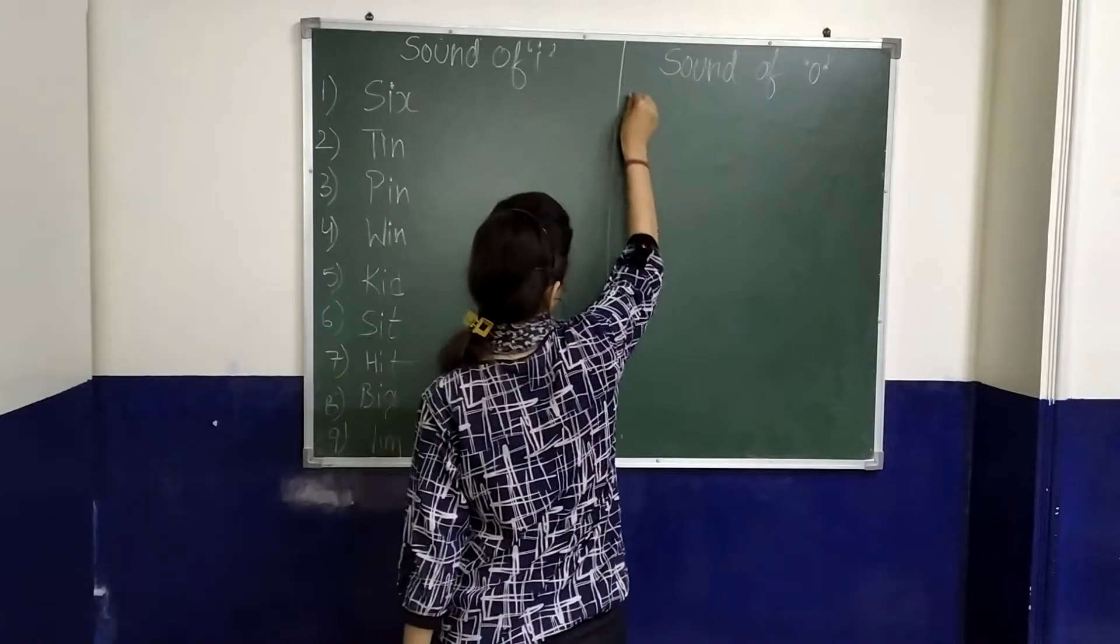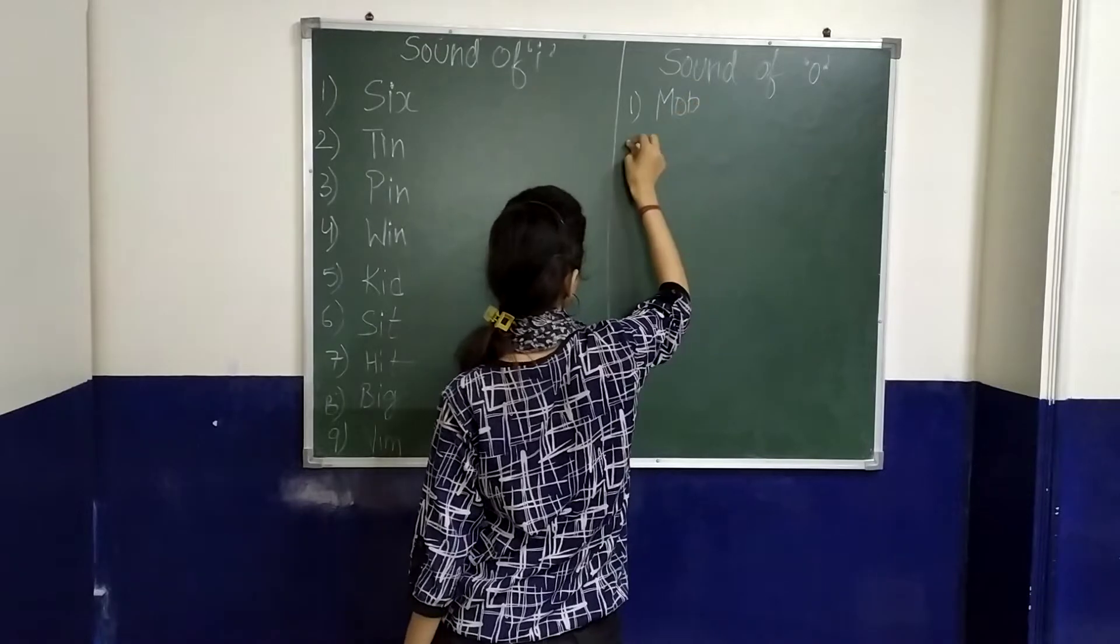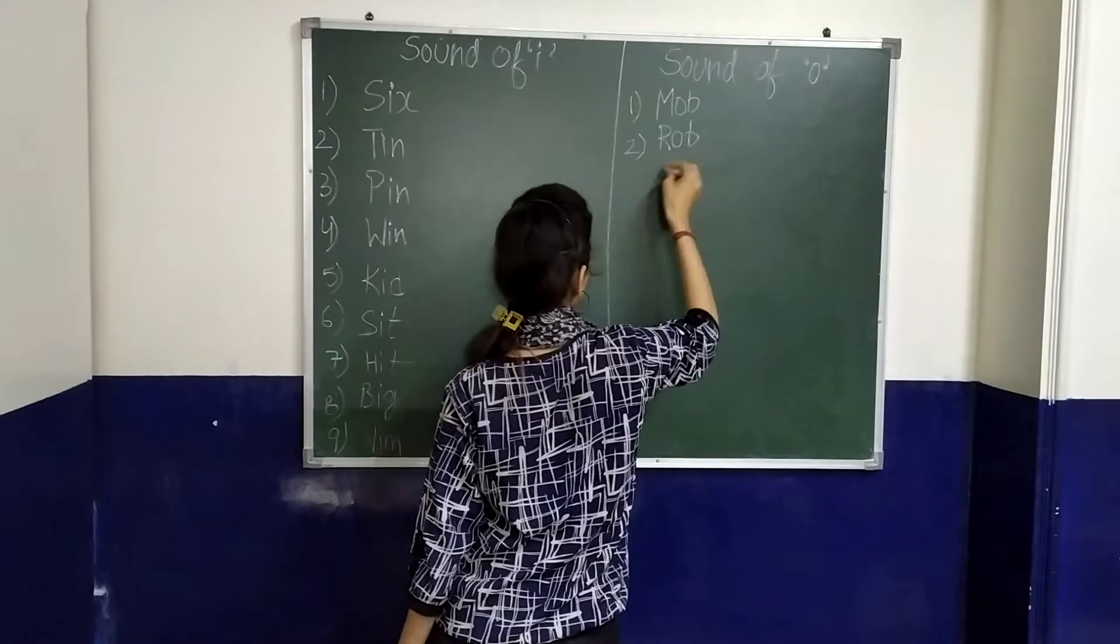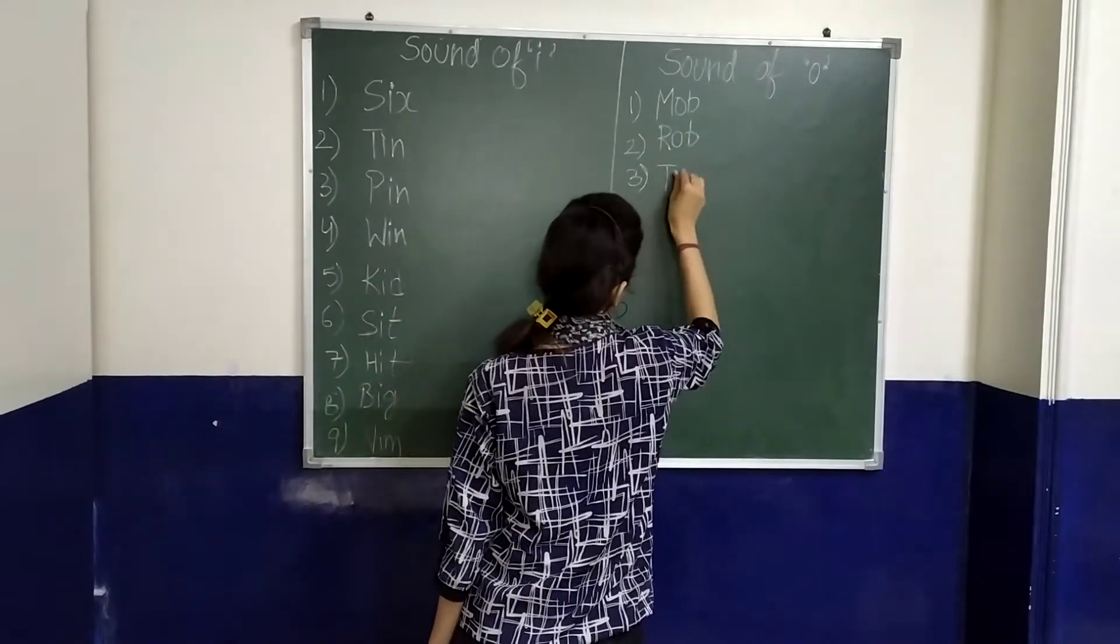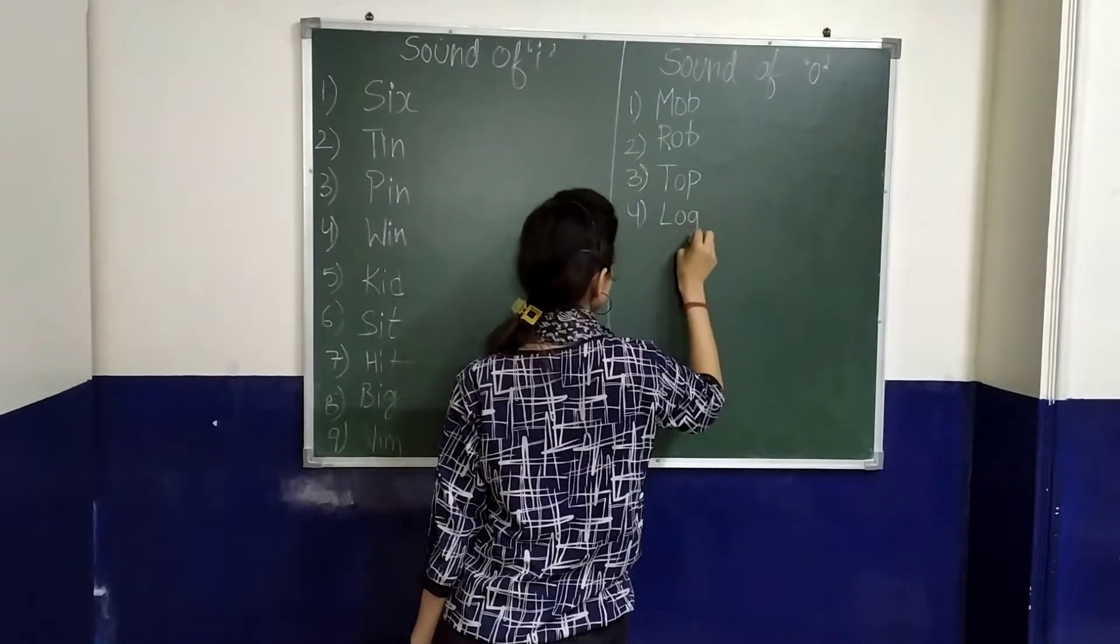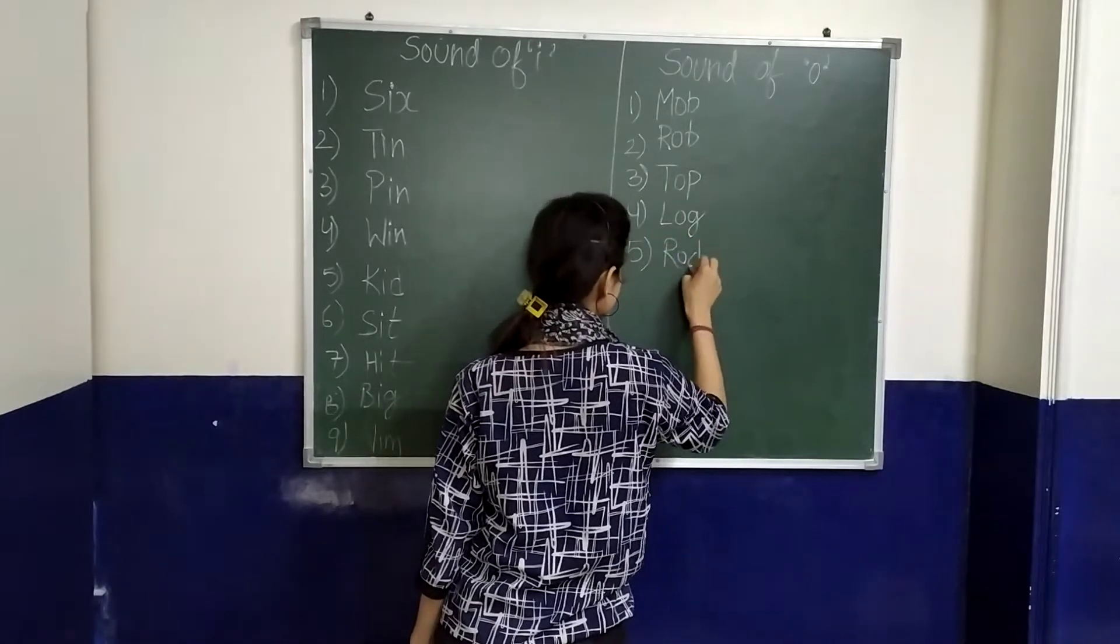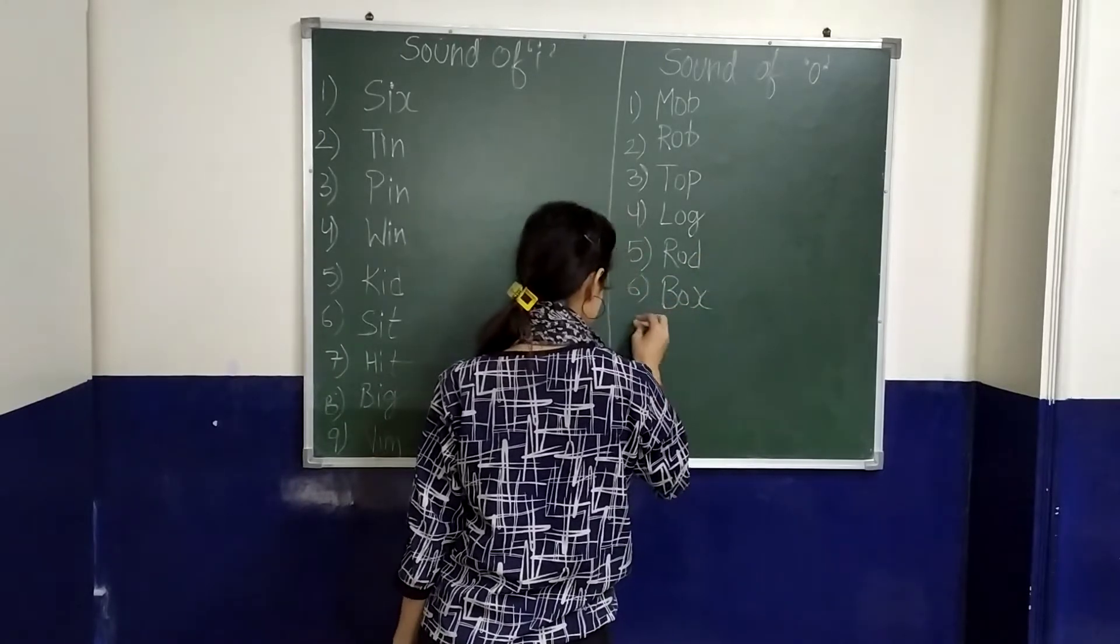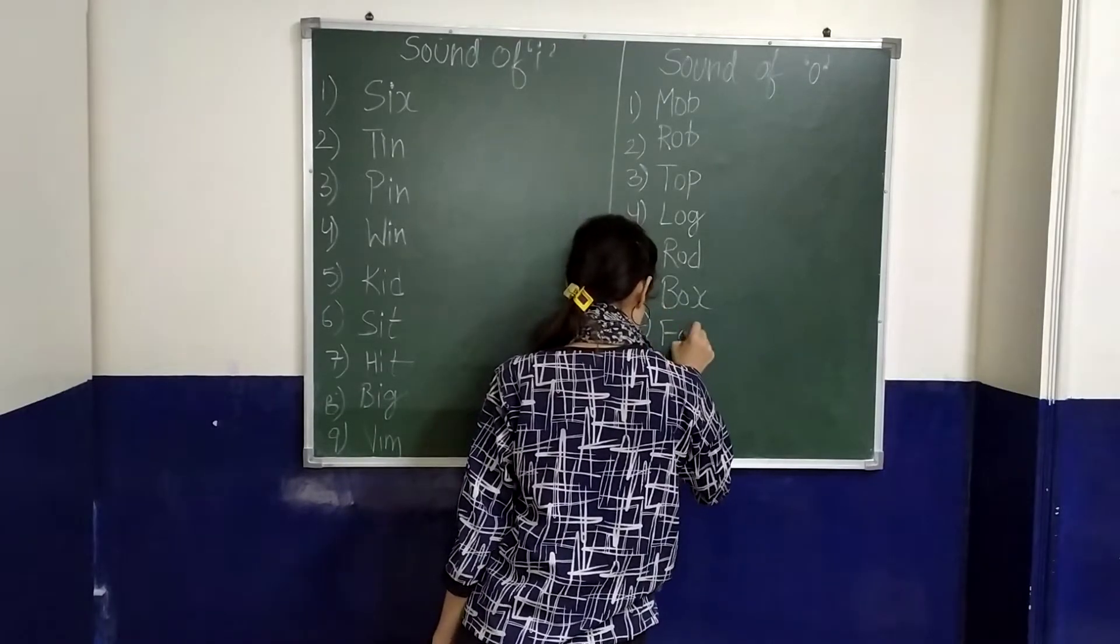Sound of Umbu Umbu. M-O-B, mob. M-O-B, mob. T-O-P, top. L-O-G, log. R-O-D, rod. B-O-X, box. F-O-X, fox.